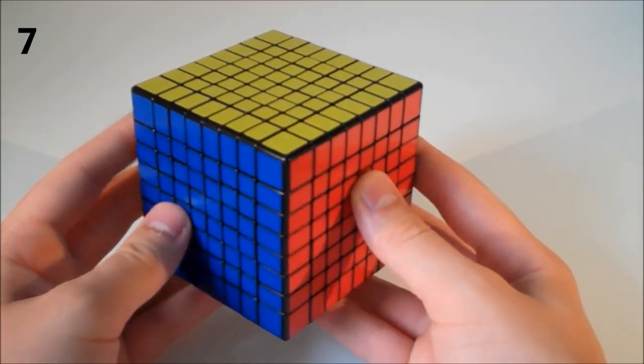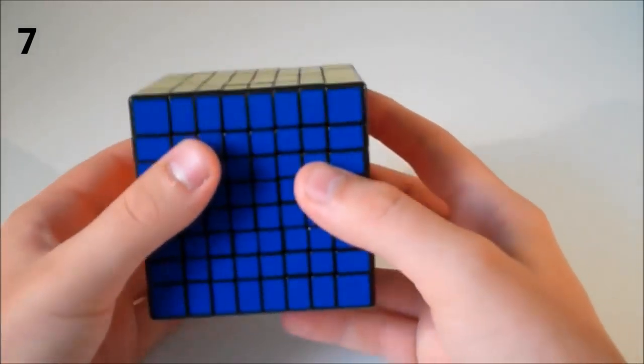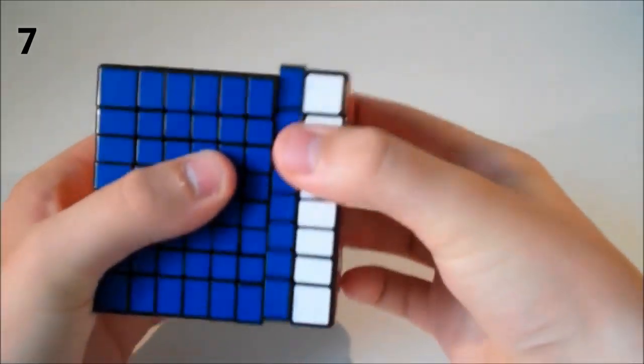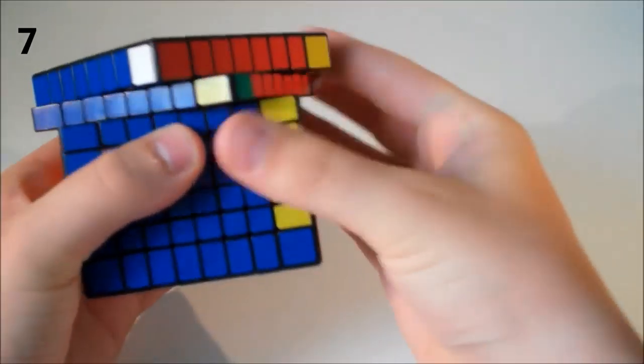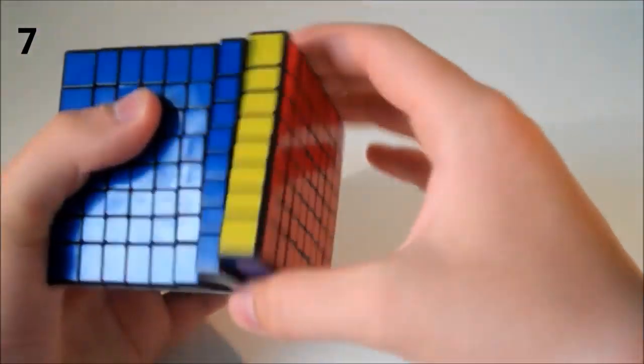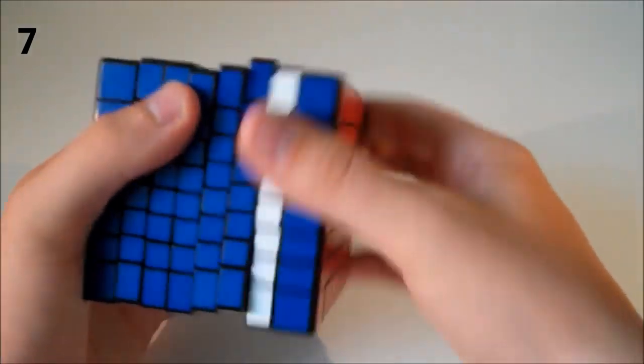So at number 7 we have the Sheng Shao 8x8. Now this cube is amazing. It turns so great for the size of the puzzle and it makes it a pleasure to solve. I solved this puzzle a lot more than I do 6x6 and 7x7 and I think this is because it just turns so good.